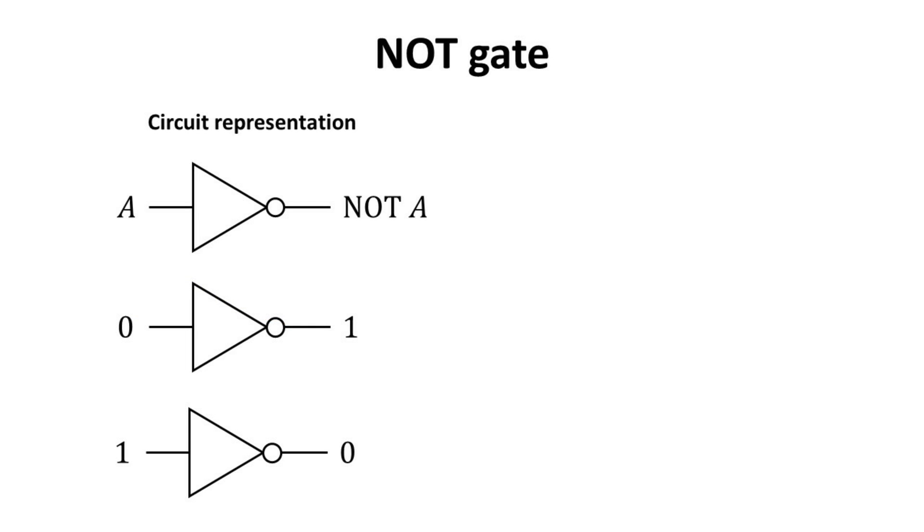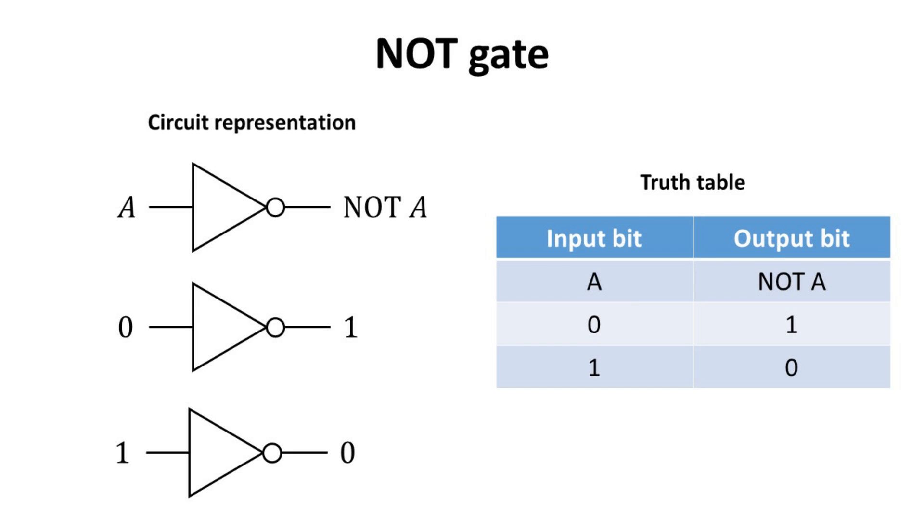Classical bits can be manipulated between the 0 and 1 states using electrically controlled logic gates. Below is the circuit representation of the NOT gate, also known as the inverter, which implements logical negation. In other words, this gate transforms a 0 into a 1 and vice versa. The logical relationship between the input and output of a gate can be summarized in the form of a truth table, which identifies all possible input combinations and the output for each.